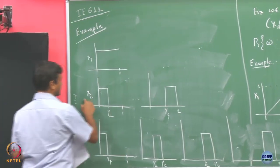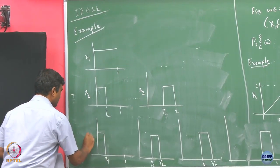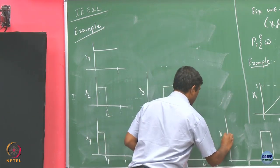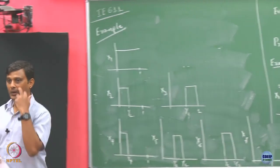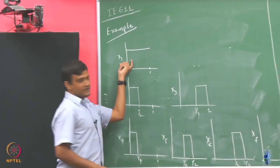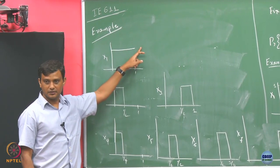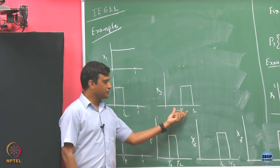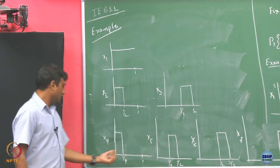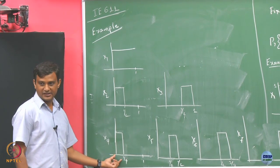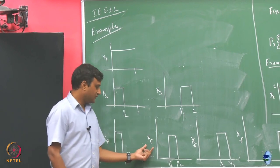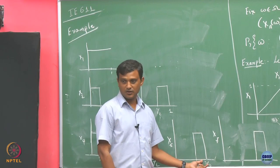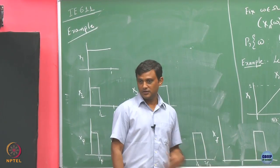Let us call this random variable 1, 2, 3, 4, 5, 6, and 7. So this random variable x1 is going to take 1 throughout. x2 is going to take 1 in the first half, x3 is going to take 1 in the second half. Now x4 is such that it takes value 1 in the first quadrant, x5 in the second quadrant, x6 in the third quadrant, and x7 in the last quadrant.